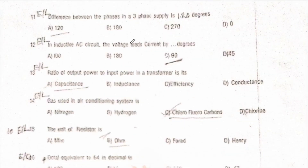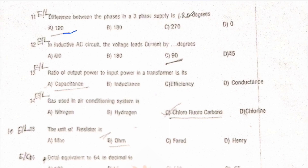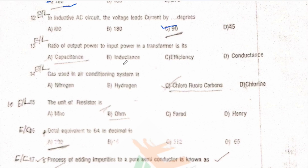Next: the difference between phases in a three-phase supply — the angle between all three phases is 120 degrees. Option A is the correct answer. Next: in an inductive AC circuit, the voltage leads the current. In an inductive circuit voltage leads the current by 90 degrees — option C is the correct answer.